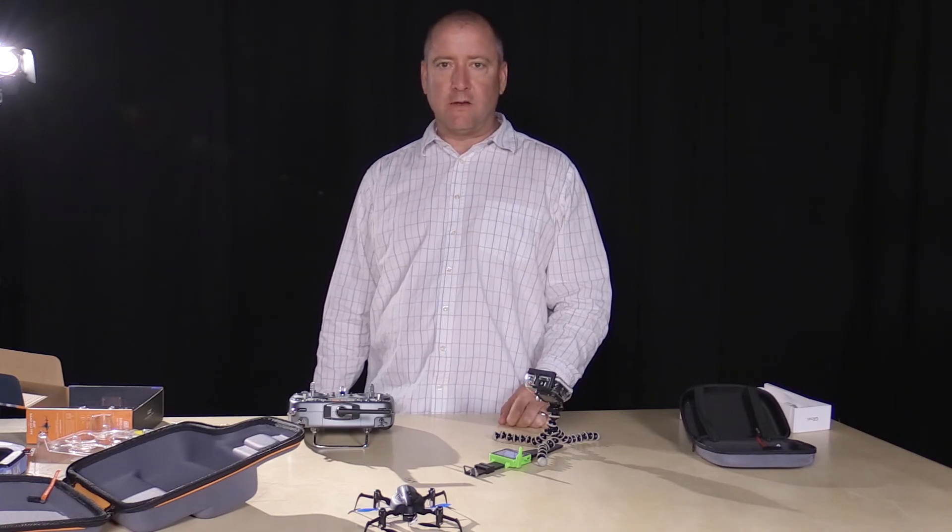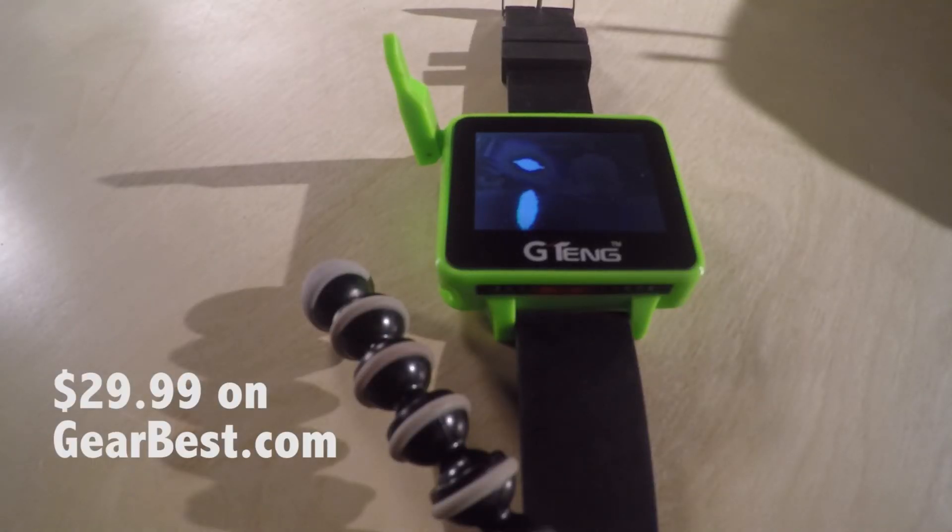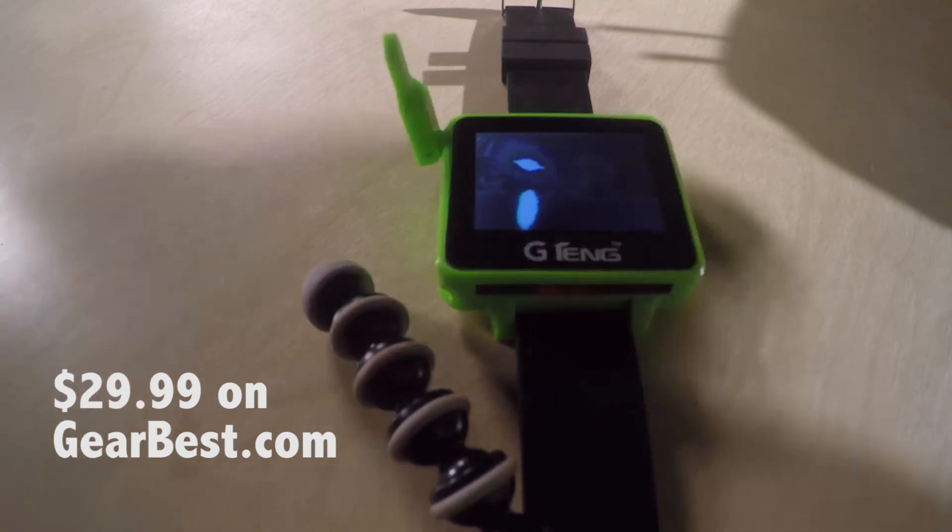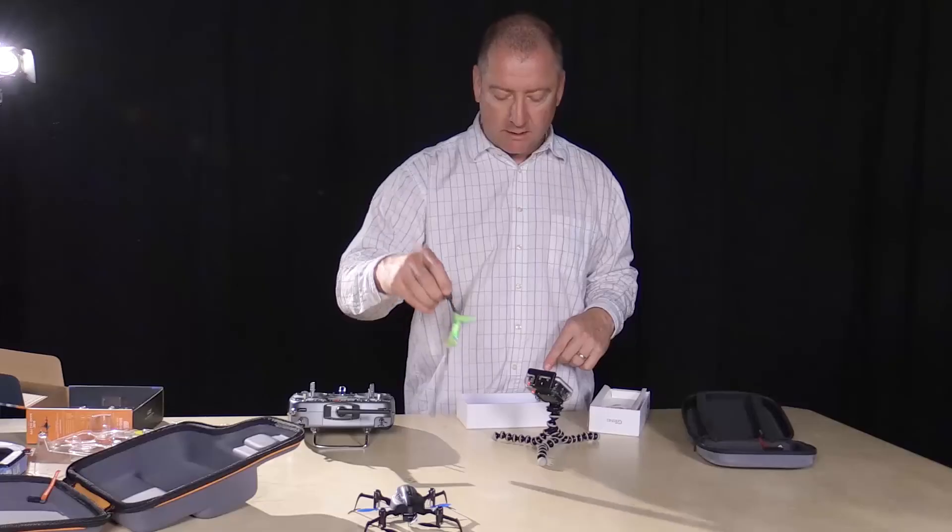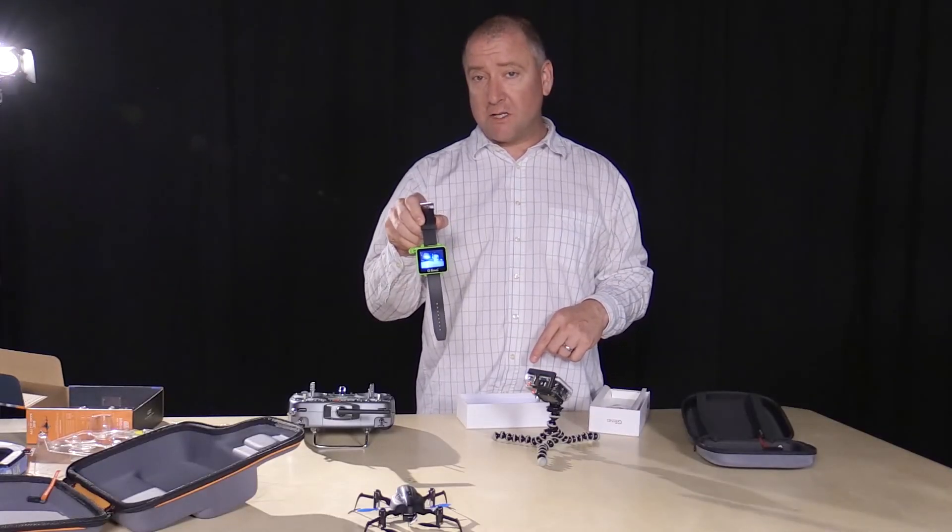Considering that it is pretty cheap. So, the official name of this thing is the G-Tang T909. It is available on Gearbest. I am going to put up a link to it for $29.99 from this link. So, if you're interested in getting one and flying your FPV with your screen on your wrist, this is the way to go. The G-Tang T909. Thanks for watching Ready Set Drone.